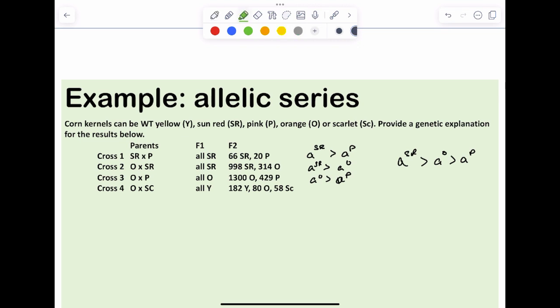I said we were going to ignore this last cross until later. Today is later. So for this one here, we're told parents, we get an F1, then we get an F2. If I look at this right here, the question is, what is that ratio? It's clearly not 9, 3, 3, 1. So can I see it as anything else?